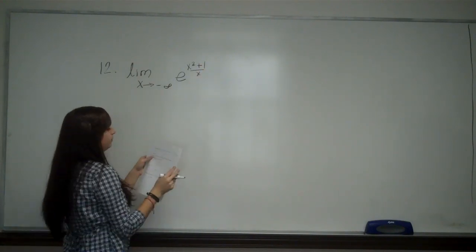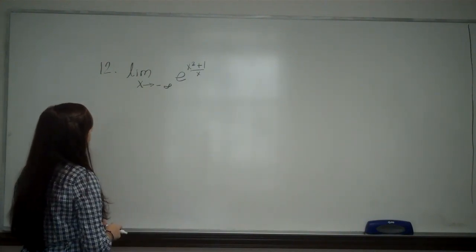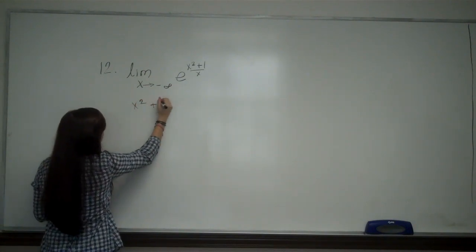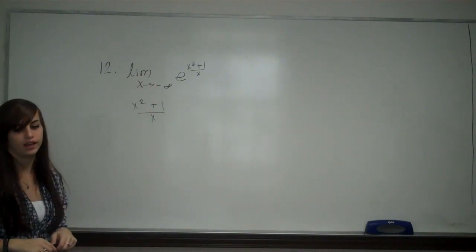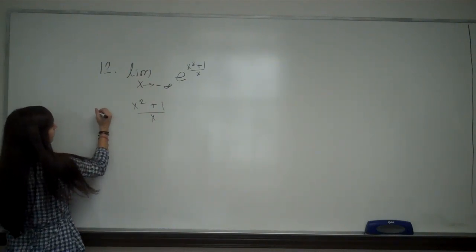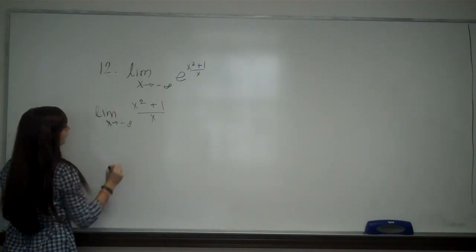Where x squared plus 1 over x is the exponent. So at first I'm going to deal just with the exponent. Let's look at x squared plus 1 over x. And when I look at this exponent, I'm going to look at the limit as x approaches negative infinity of it.